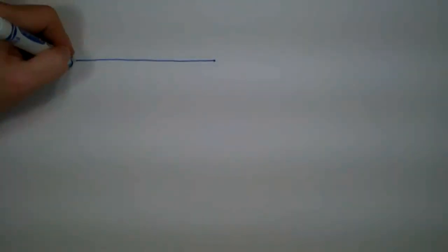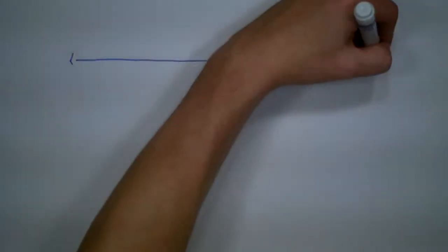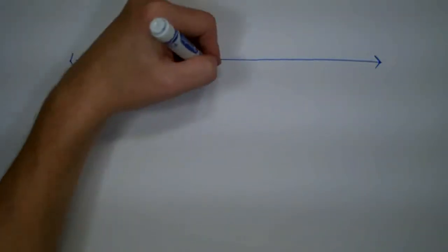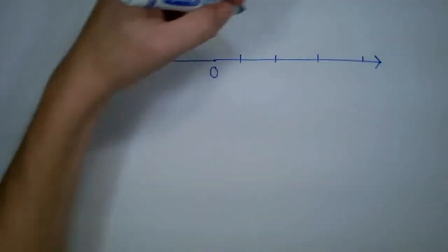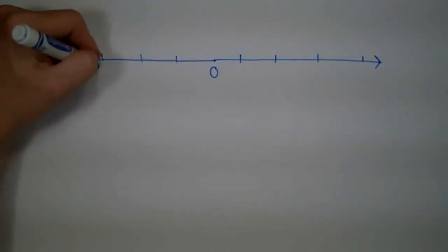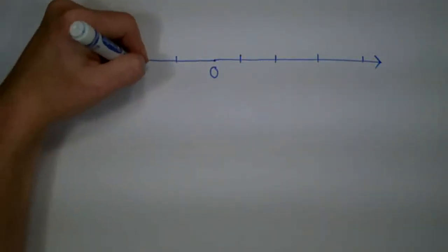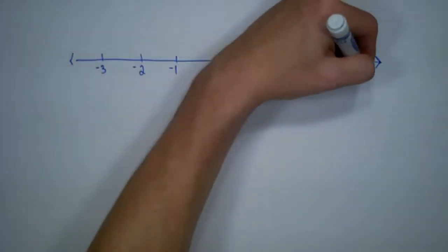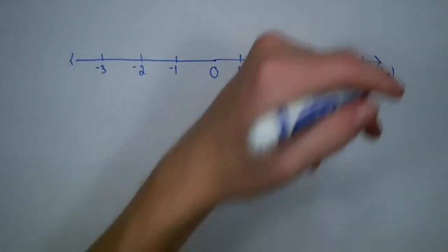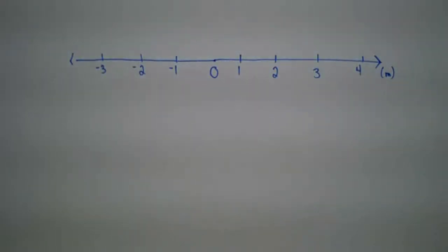What we'll do is start in one dimension with a number line. We'll define zero at some convenient point, then label it negative on the left and positive on the right. In this case, we'll use meters.